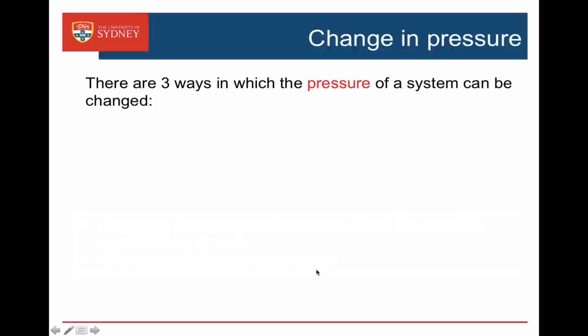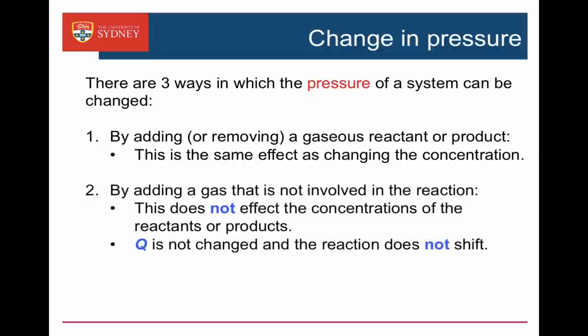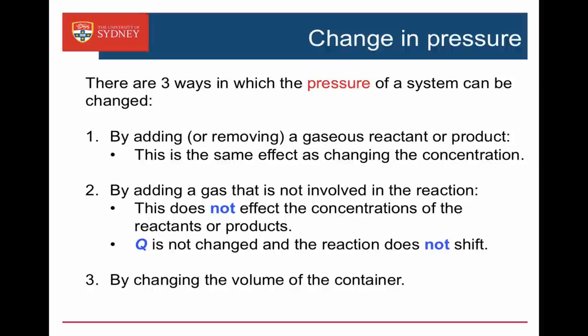What about pressure? There are three ways that we can change the pressure of a system. We can add or remove some of the product — if it's a gas, this has the same effect as changing the concentration, which we've already dealt with. We could add helium or an inert gas; this doesn't affect the concentrations because the volume is still the same, so Q is not changed and the reaction doesn't shift, however much inert gas we add. Or we can change the volume of the container — making it bigger or smaller.